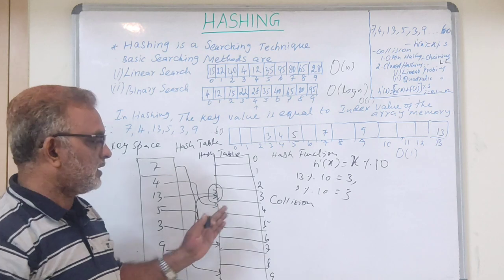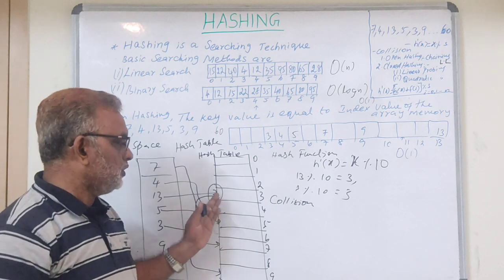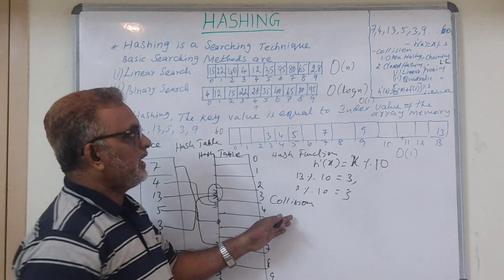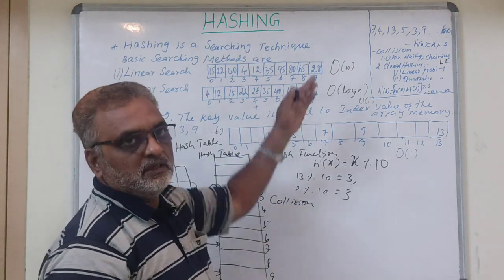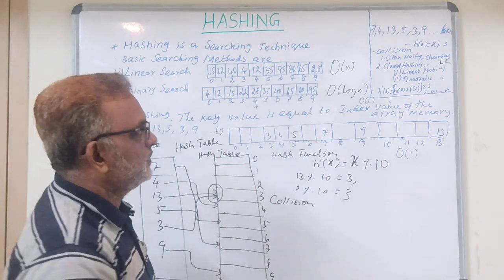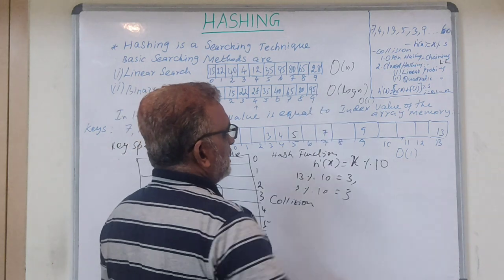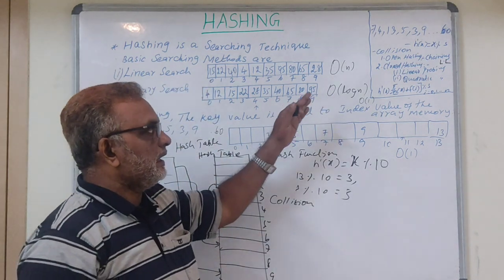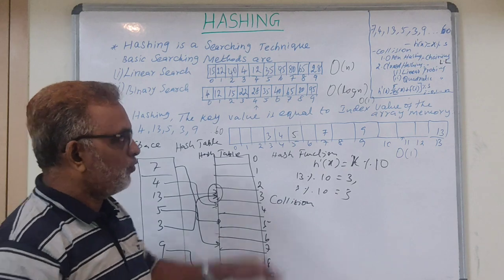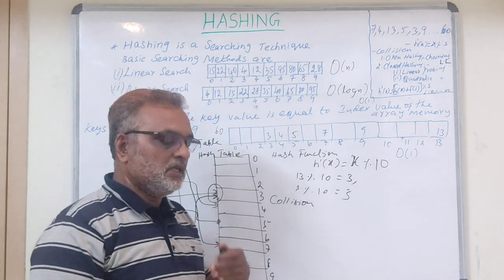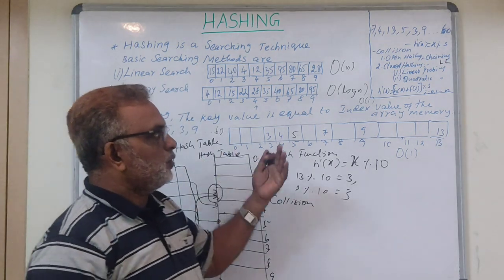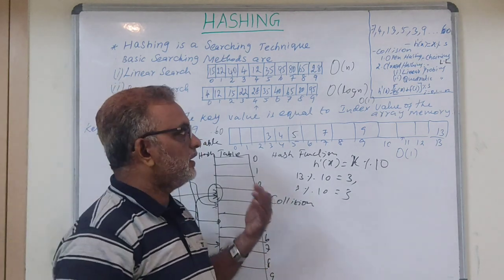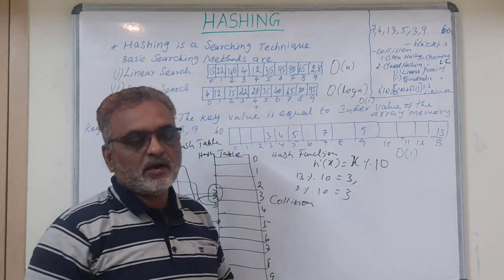Collision is a problem because we cannot store more than one key in one location. This can be avoided with some methods: one is open hashing and another is closed hashing. In open hashing there is a technique called chaining. In closed hashing we have two methods: linear probing and quadratic probing.